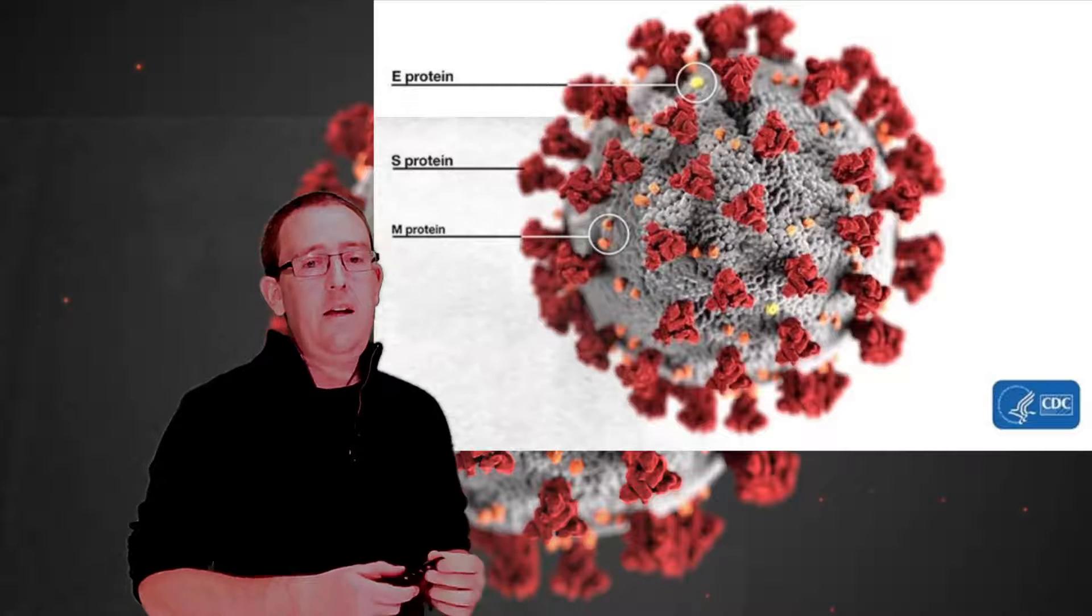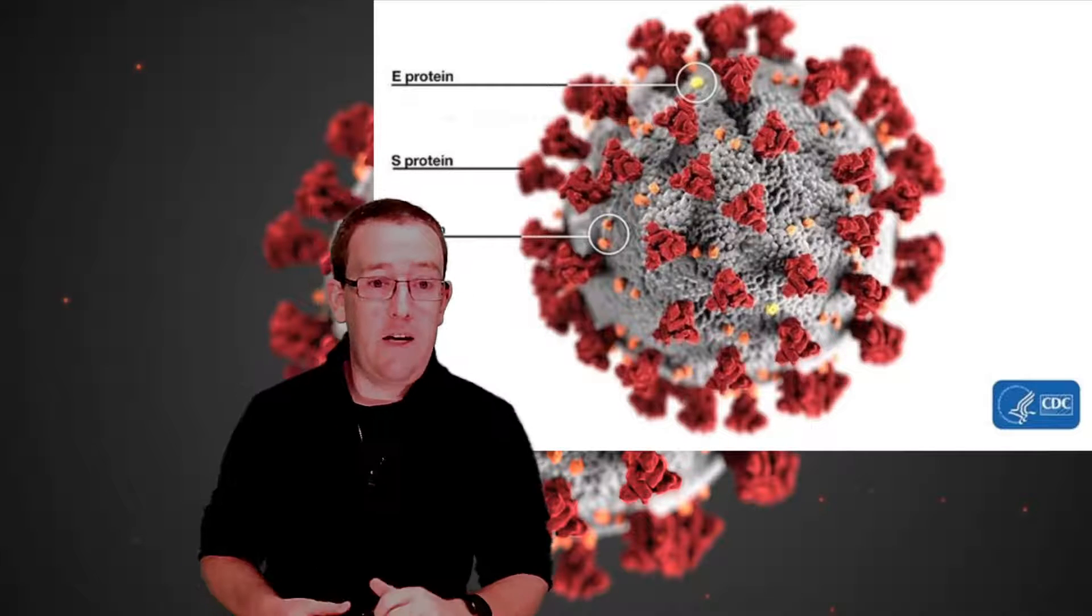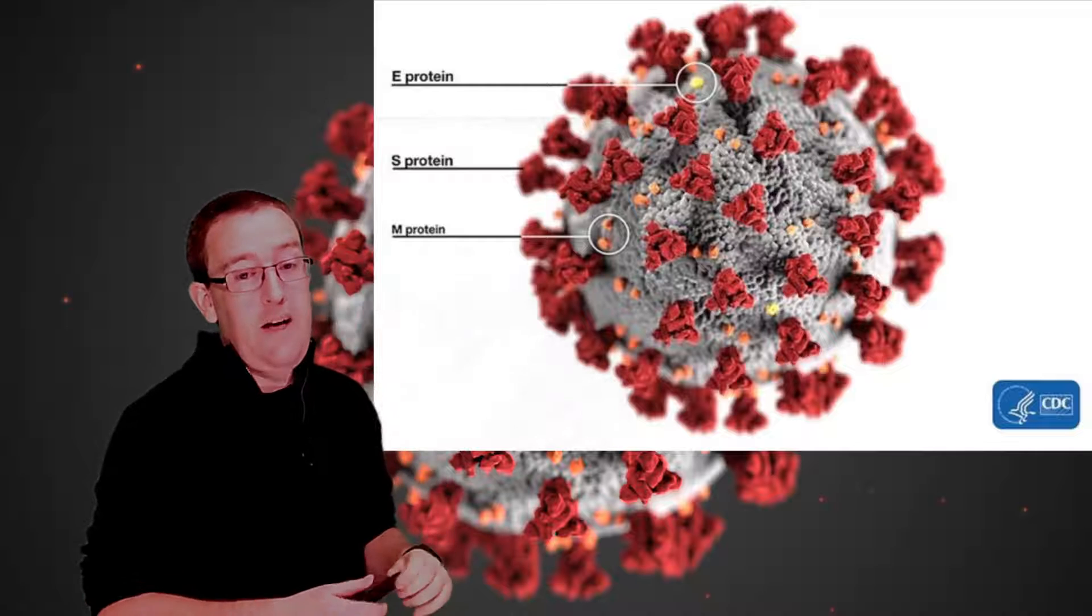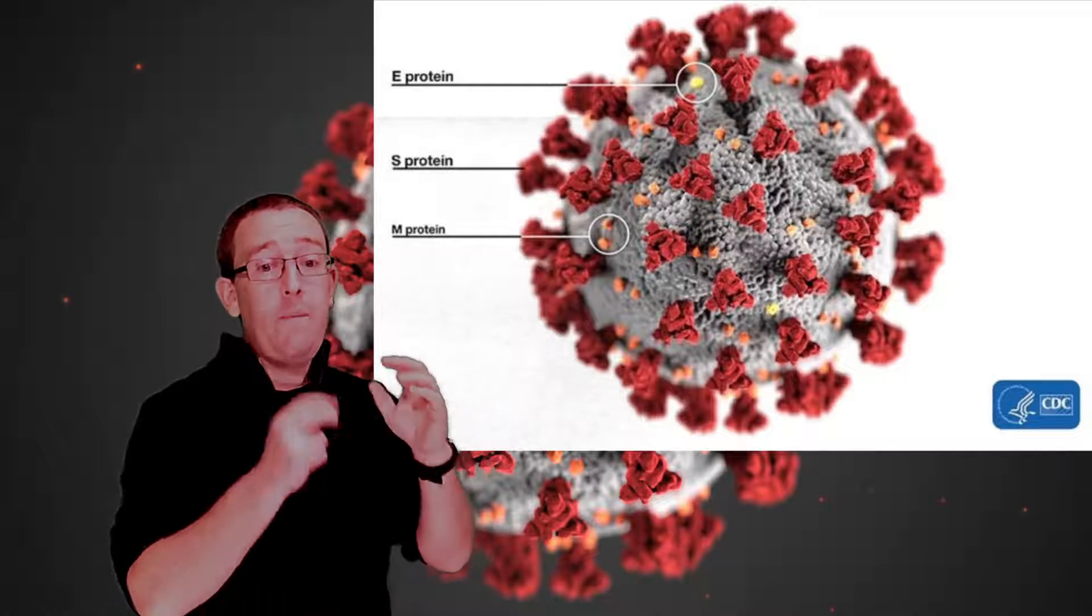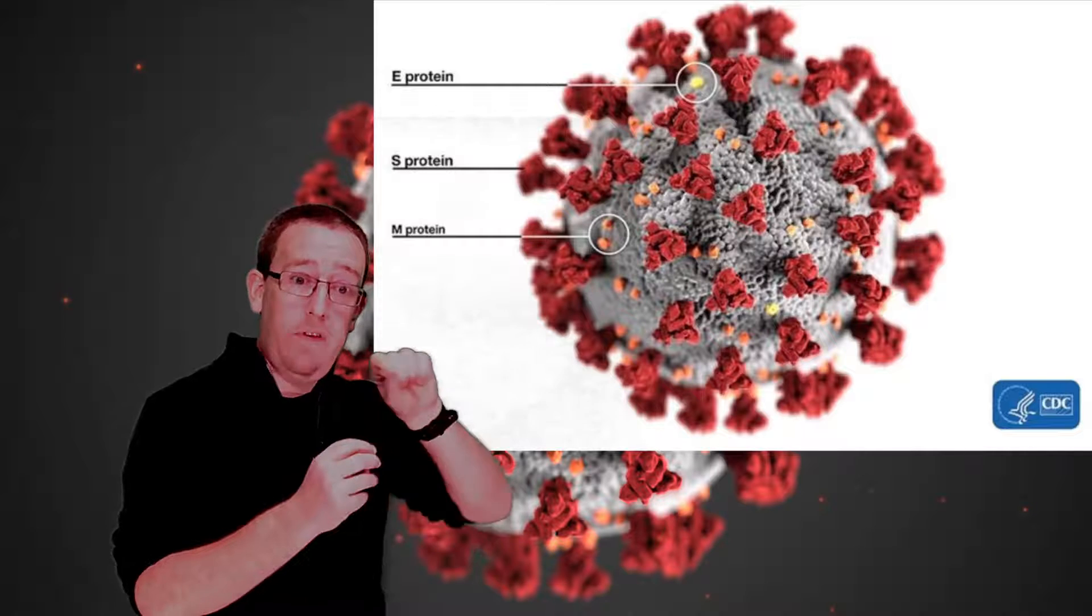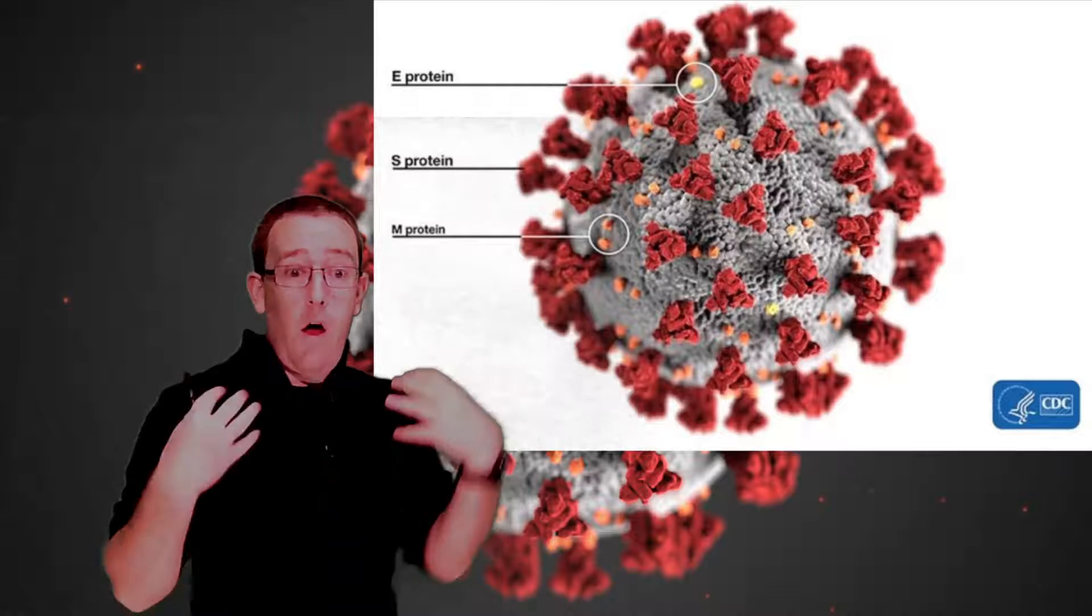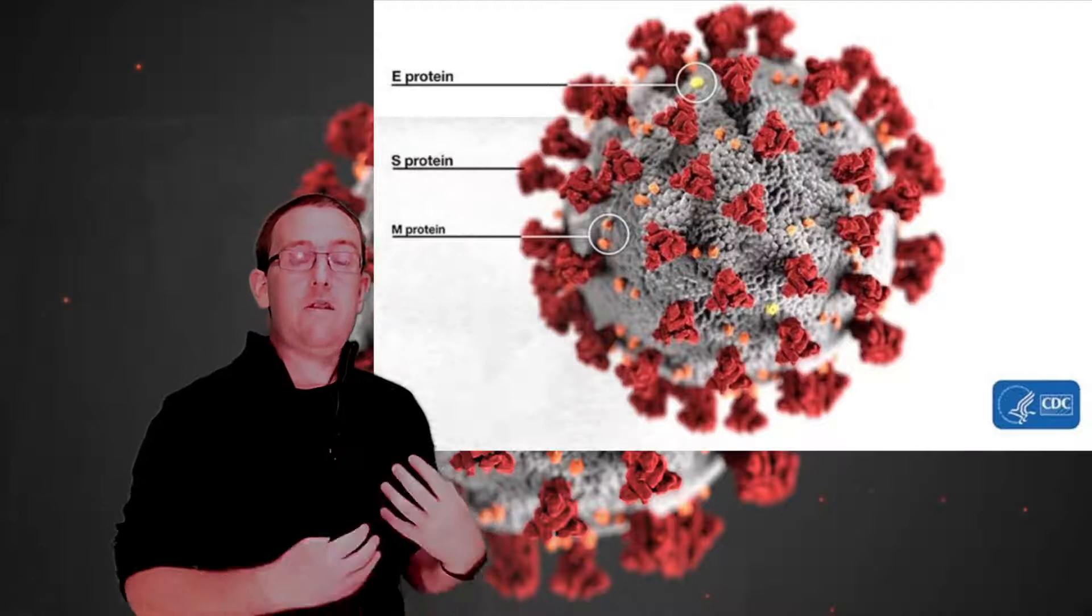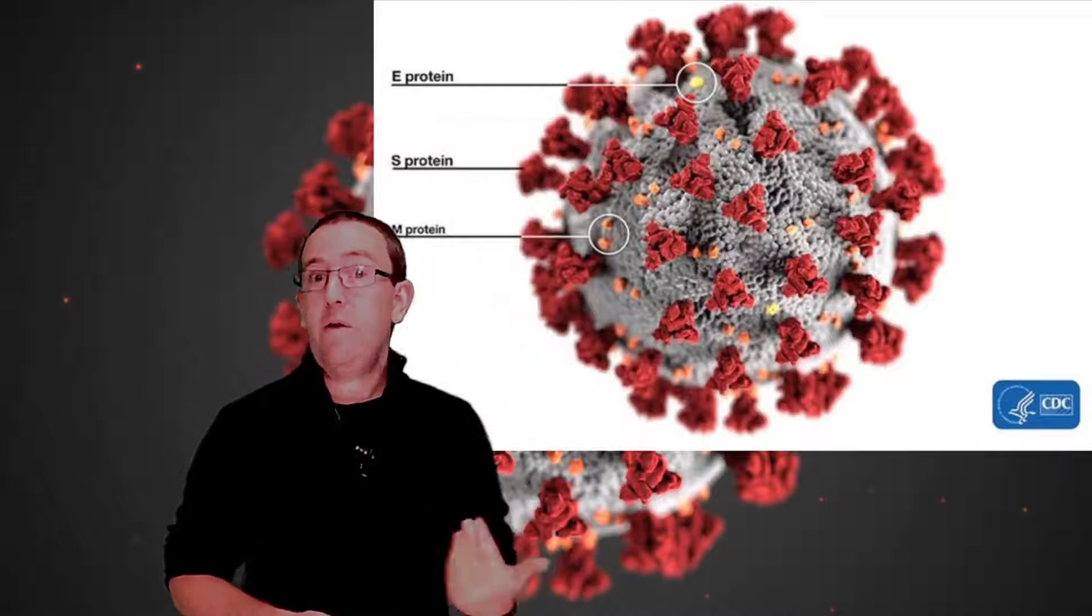There are actually a number of proteins sticking out of COVID-19: the E protein, M protein, and S protein. The S protein is the so-called spike protein - the virus's key to get into your cell, but for our purposes, it's what our immune system uses to recognize this as an invader.